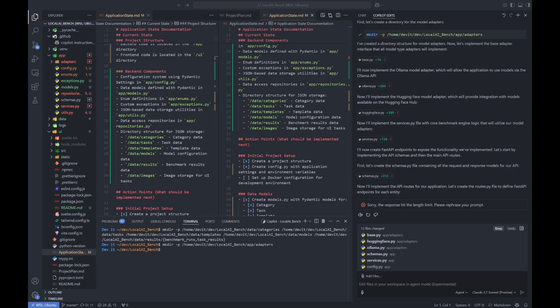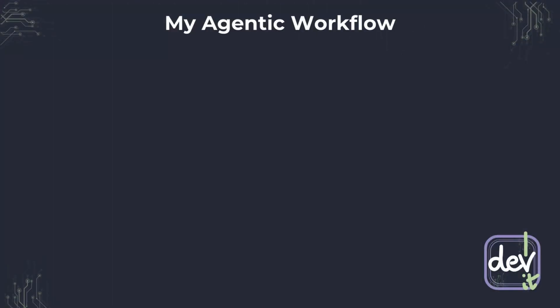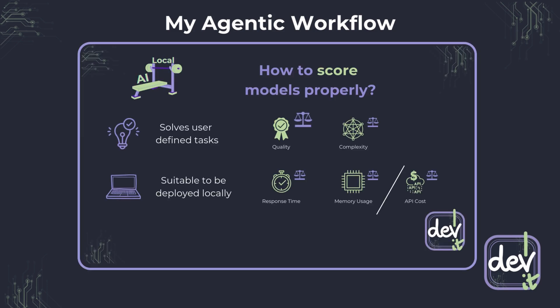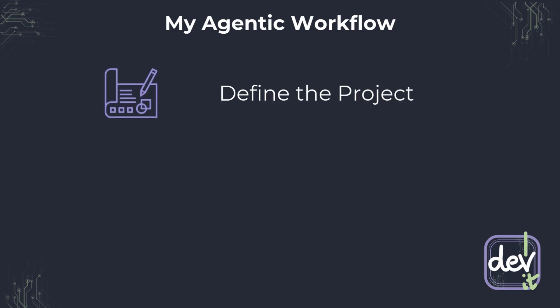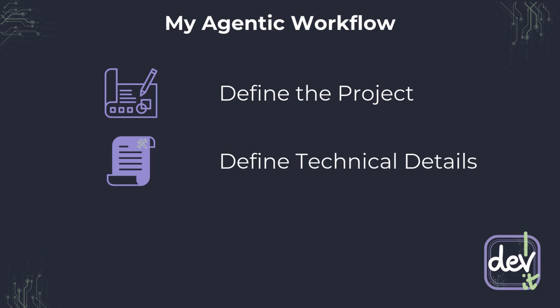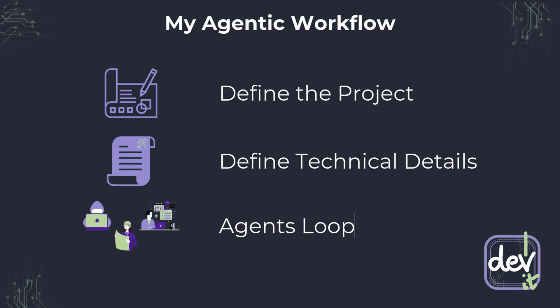That is why I created my personal workflow to get the most from agentic mode. Let's start with a review of my current workflow, which I'm using to develop Local AI Bench — a project I discussed in previous videos, link in the description. There are three main stages: first, define the project by gathering and refining thoughts with AI until you have a complete plan; second, define technical instructions — good practices for your developer agent; and third, iterative work with your agents to implement the project.